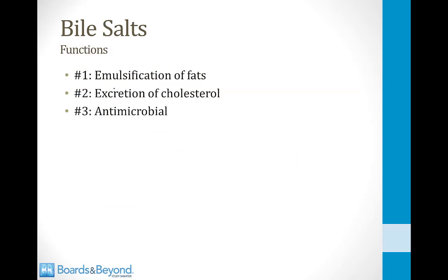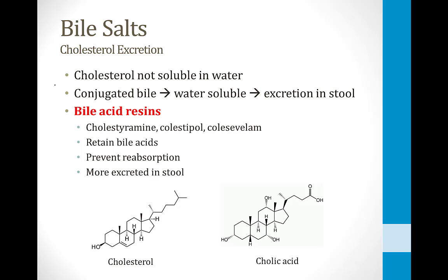When most people think of bile salts they think of emulsification of fats — that's one of their main functions — but there are two other important functions. One is excretion of cholesterol: cholesterol is a lipid made up mostly of carbons and hydrogens, so it is not soluble in water and cannot be excreted in the urine. What you can do is convert cholesterol into a conjugated bile acid or bile salt; it then becomes water soluble and can be excreted in the stool. This is the main mechanism by which cholesterol is eliminated from the body. There are old, rarely used cholesterol drugs called bile acid resins — such as cholestyramine and colesevelam — which are relevant pharmacologically here.